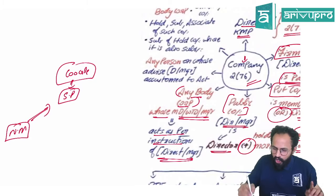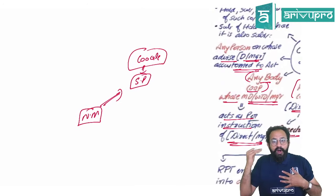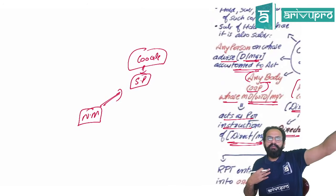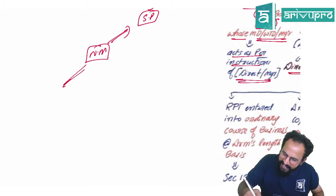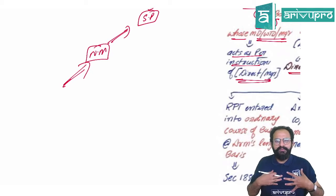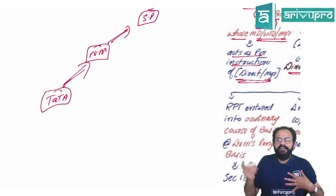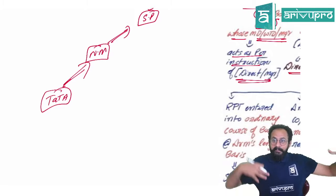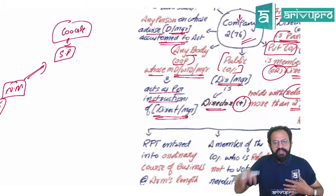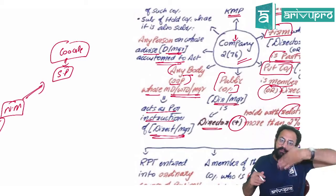Next type: any person on whose advice the director or manager of Infosys is accustomed to act. For example, if Tata controls Narayan Murthy — gives him directions — then Tata will become a related party. The difference here: in the body corporate case, my directors are controlling their company; in this case, someone else is controlling my directors.